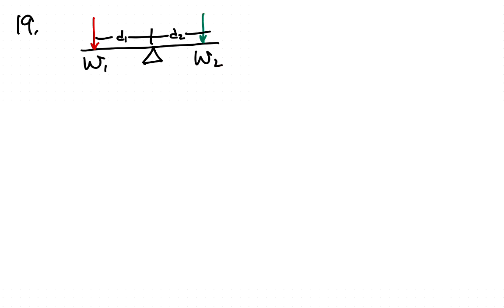So if we draw a free body diagram of our seesaw, we have Brett over here sitting on one side and Dawn over here sitting on the other side. We know this distance is 1.2 meters. We know her weight is 54 kilograms times g.